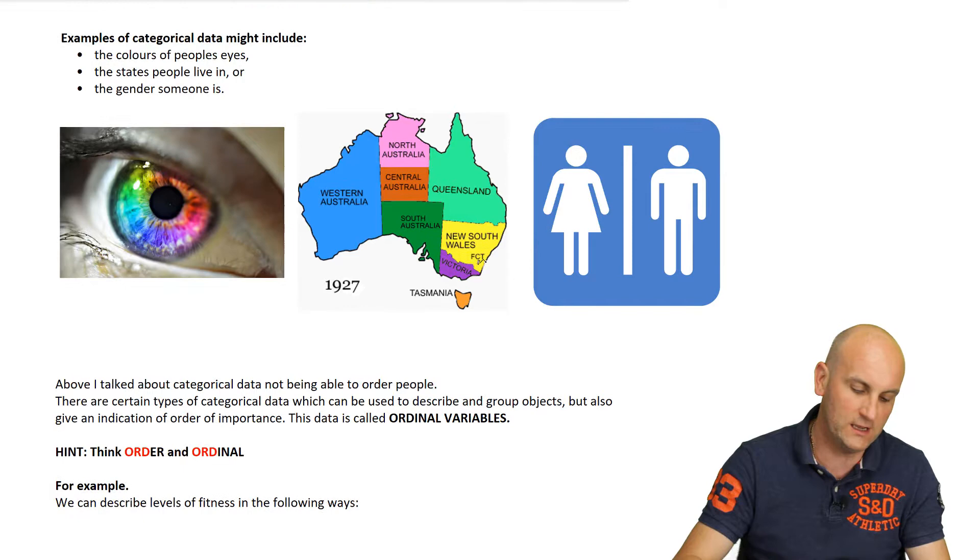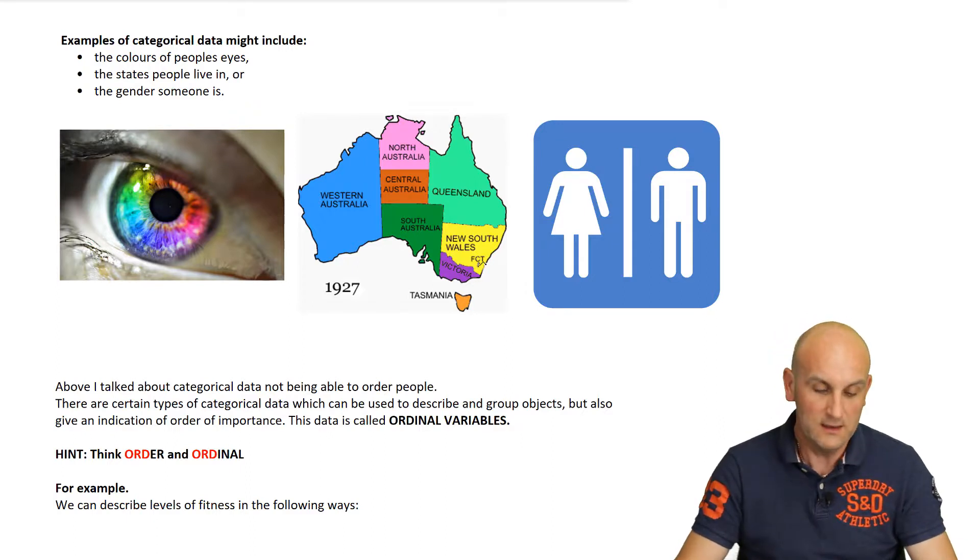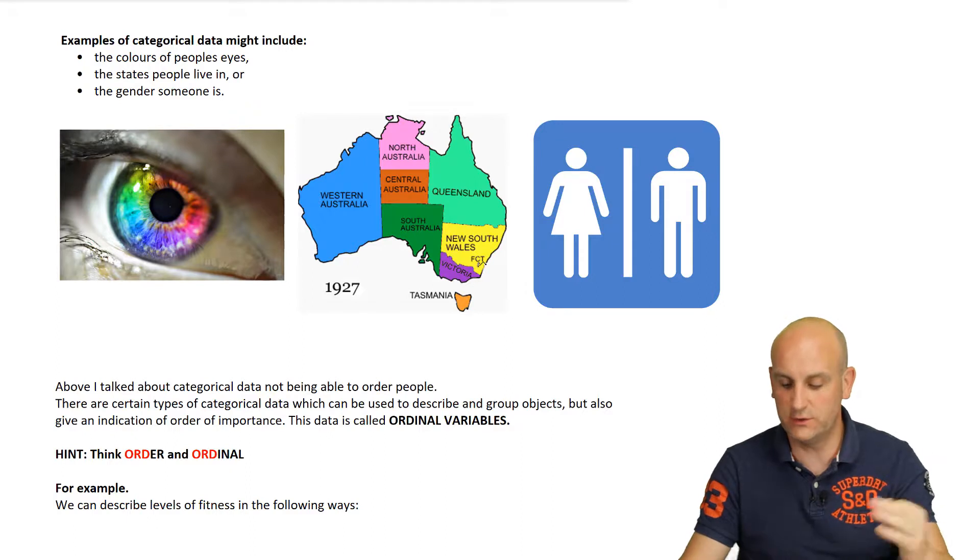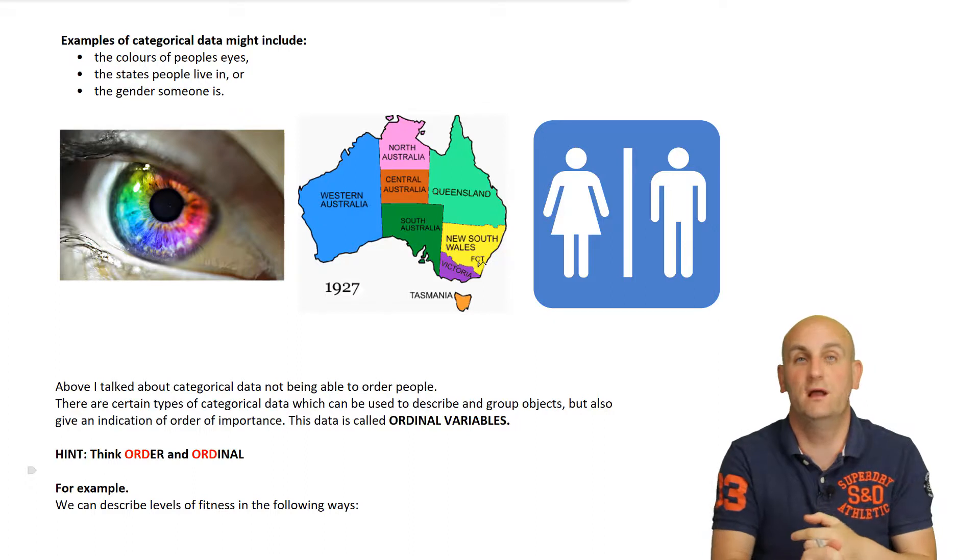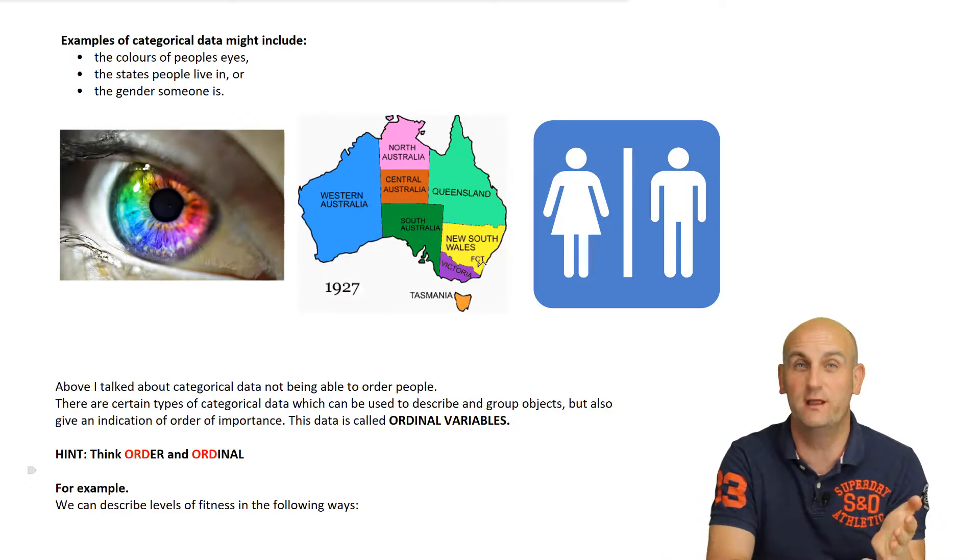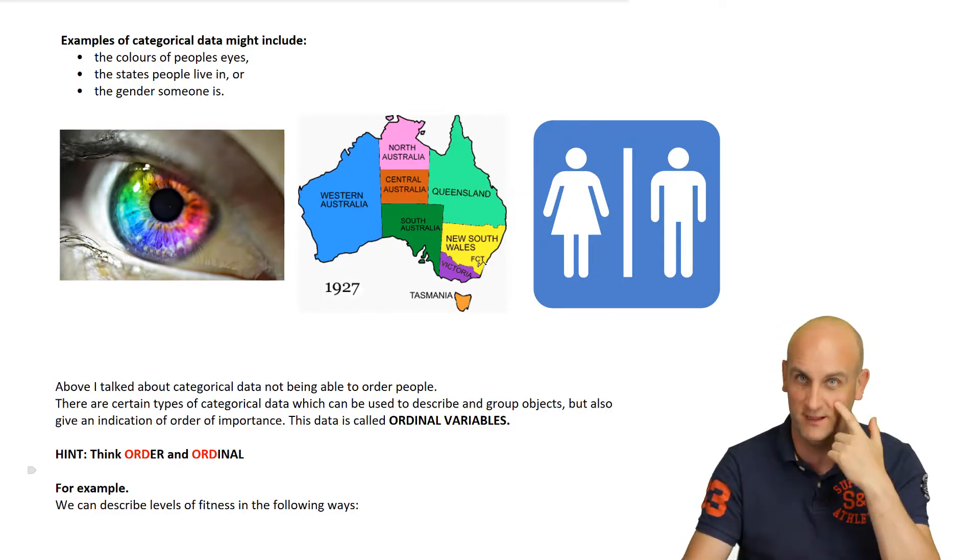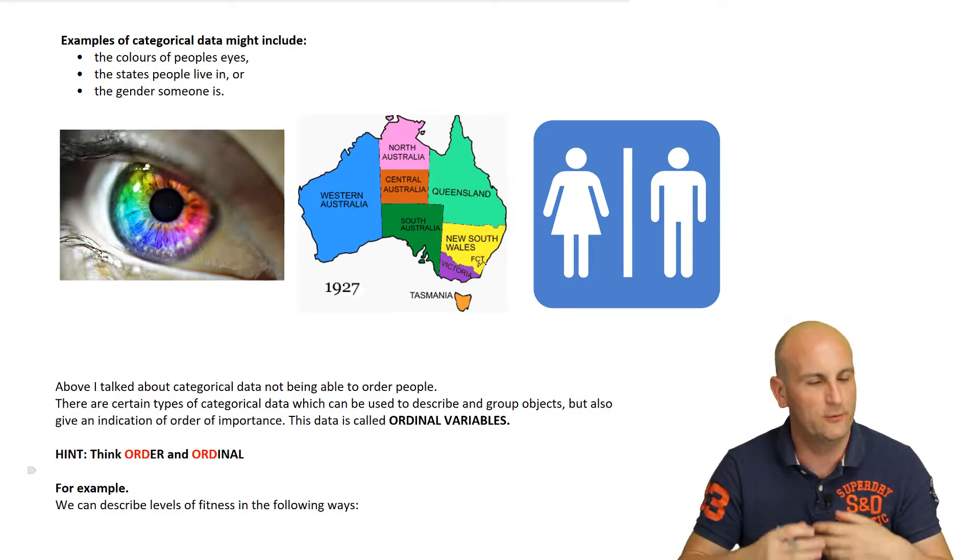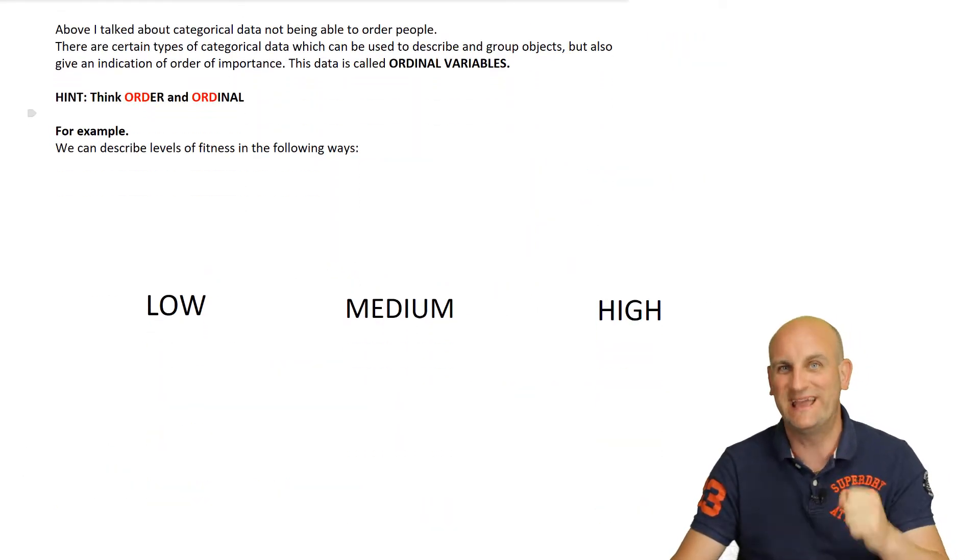So examples of categorical data might include the colors of people's eyes, the states people live in, the gender that someone is. And by gender, I mean male or female. Now we cannot put those in order. Now if I was to ask you who is more important, male or female, you undoubtedly will have some sort of opinion. We'll all get very excited about all of this. But actually, there is no known order of male or female. By saying male or female does not imply any order. What about the states in Victoria? I currently live in. Sorry, what about the states in Australia? I currently live in Victoria. Does that have an order of preference? Am I more by living in Victoria? If I was to put all of my states in order, would there be an automatic order? No. And likewise with eye color, are blue-eyed people, like me, fabulously blue-eyed, more important than brown-eyed people? No. So this data we call nominal. All right. So nominal categorical data cannot have an order.